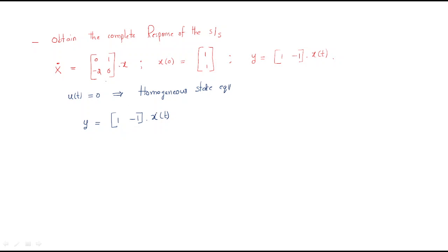We need to find x(t). Here x(t) involves the state transition matrix, but since the input is zero, we use the zero-input response. The solution is x(t) = e^(At) · x(0).